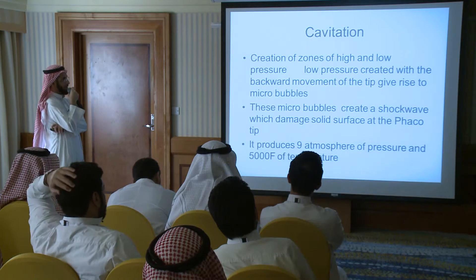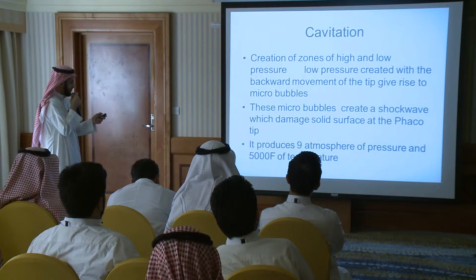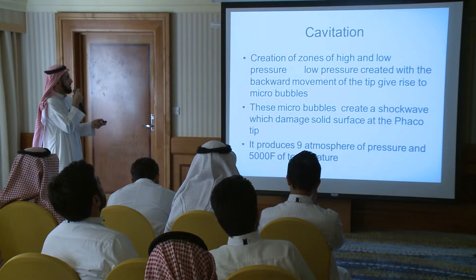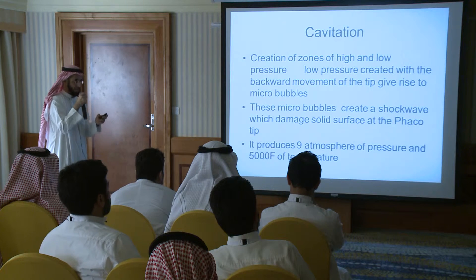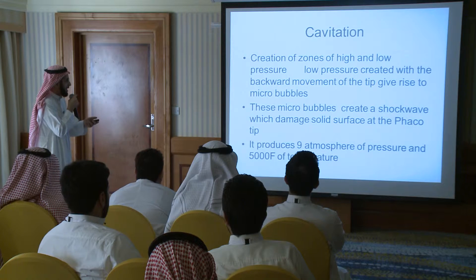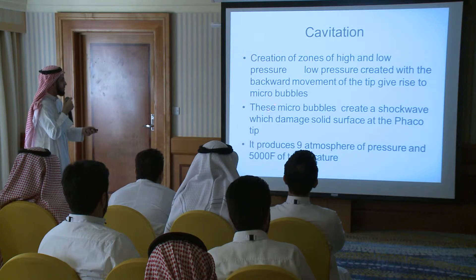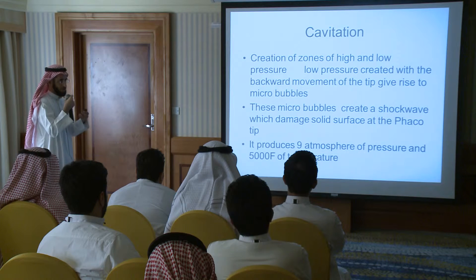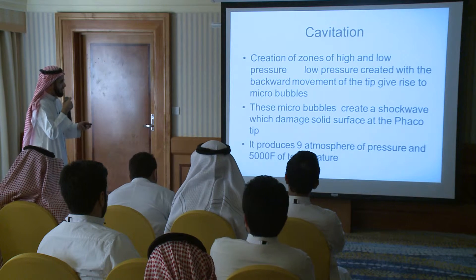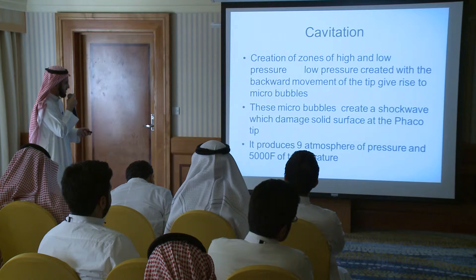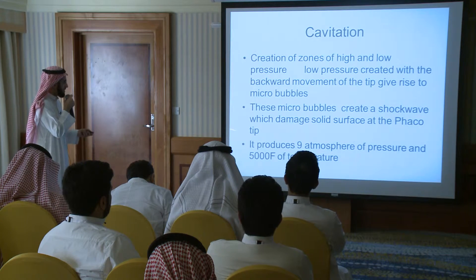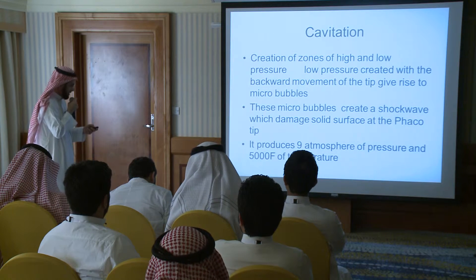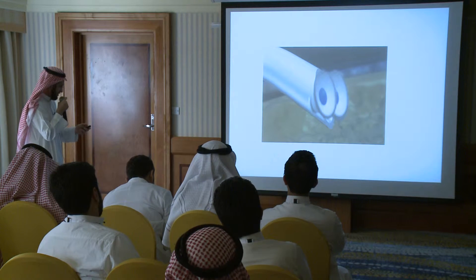We also emulsify the nucleus through what we call cavitation — the creation of zones of high and low pressure. The low pressure is created by the backward movement of the tip of the needle. As it moves backward, it creates a negative pressure, which creates microbubbles. These microbubbles create shock waves that damage solid surfaces near the FACO tip and cause emulsification of the lens. Most of the time we don't want to go to cavitation because it releases a lot of energy.